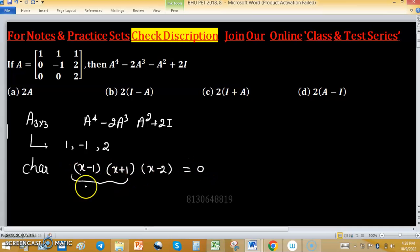From these two factors, I can write x square minus 1 with x minus 2 equals to 0.